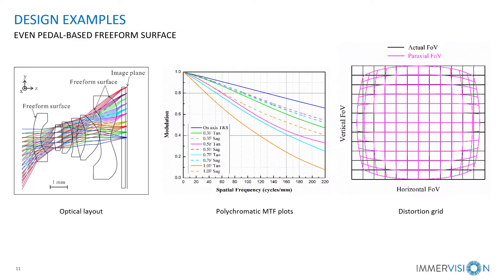In the second example, we designed a mobile-based camera lens using an even pedal-based free-form surface. This figure shows the even pedal-based free-form camera lens after optimization. The free-form surfaces are placed at the first surface of the fourth element, as well as the fourth and second surfaces of the last element. The FOV is 121 degrees, the F-number is 2.06, and the TTL is about 5.3 mm. The center figure shows the MTF performance, and the right side figure shows the distortion grid. The maximum distortion is about 24.4%.